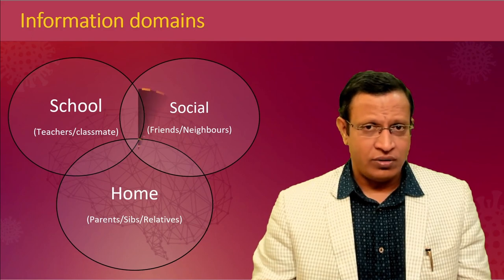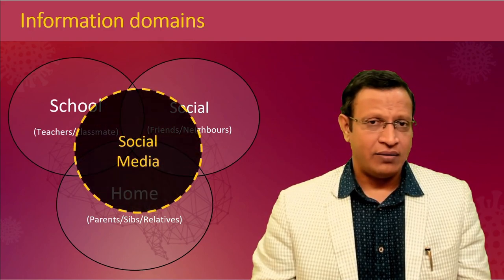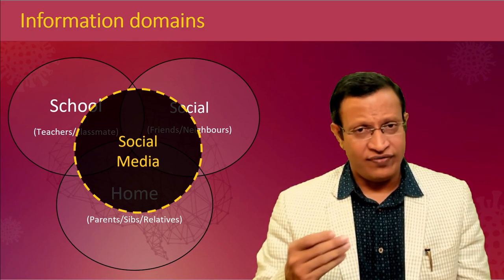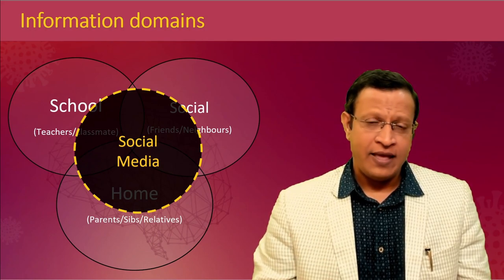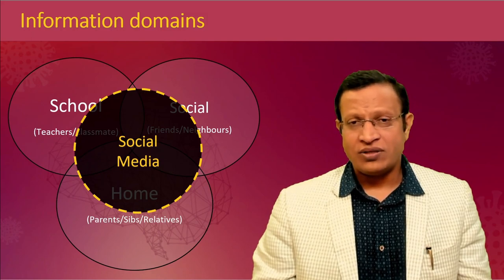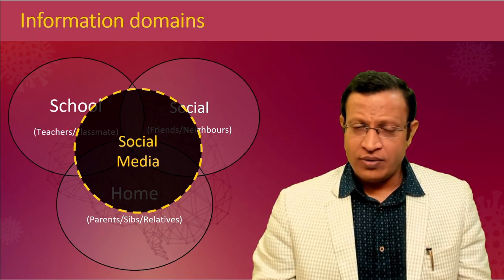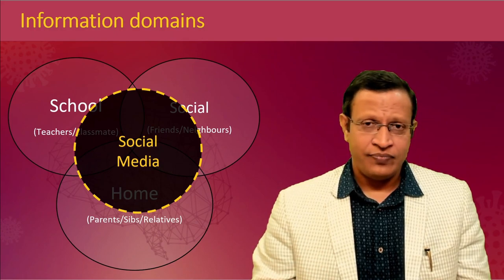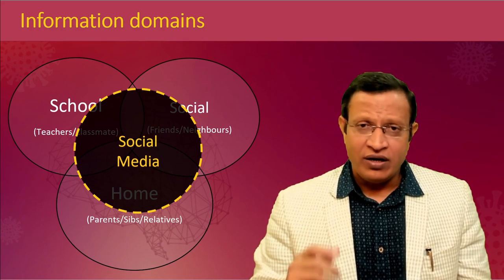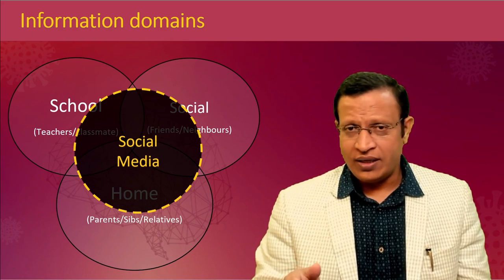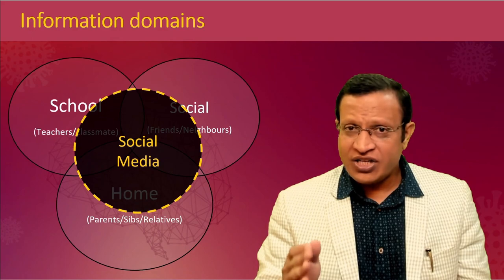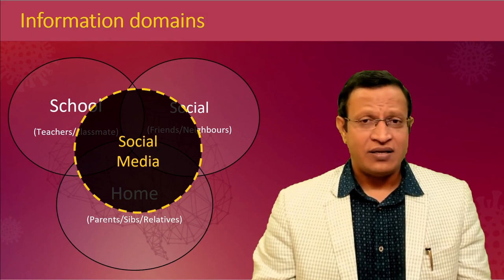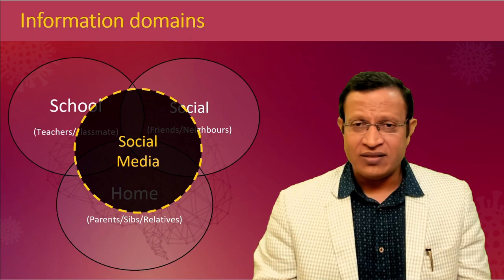After the lockdown, a fourth front has emerged — social media. Many adolescents and young children interact with friends and the world through social media, discussing their problems and expressing themselves to friends and even strangers. This can be a valuable source of information. However, we need to balance between the autonomy and confidentiality of the child or adolescent versus the best interest of the child if there is a serious problem. Hence, we need to collect information from all four domains if required.